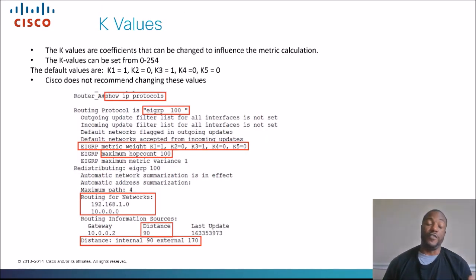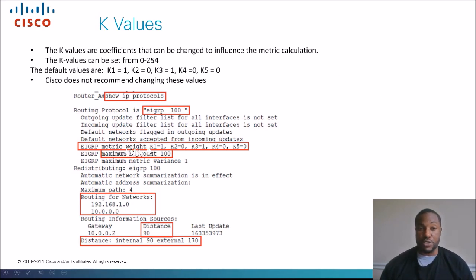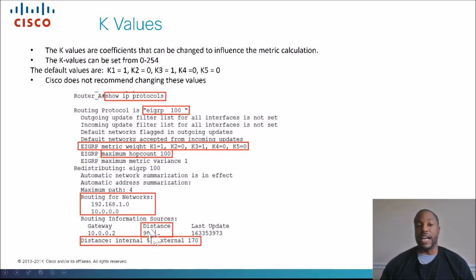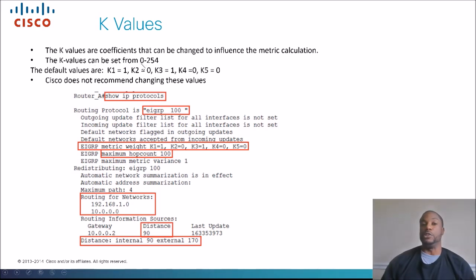These are the K values. To view them, you just do 'show IP route,' and it shows you what the K values are. As you can see, K1 is set to 1, K3 is set to 1, and the rest are 0s. Those are the default values — K1 and K3, which is bandwidth and delay. K values can be set between 0 to 254. By default, K1 and K3 are set to 1 and the rest are 0.